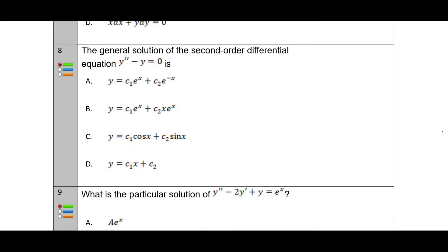Question eight: what is the general solution of a second-order differential equation? We can write the auxiliary equation as D² − 1 = 0, giving D = ±1, so roots are +1 and −1. This gives two solutions, making the correct option E. This is a straightforward question — understanding the concept is enough.